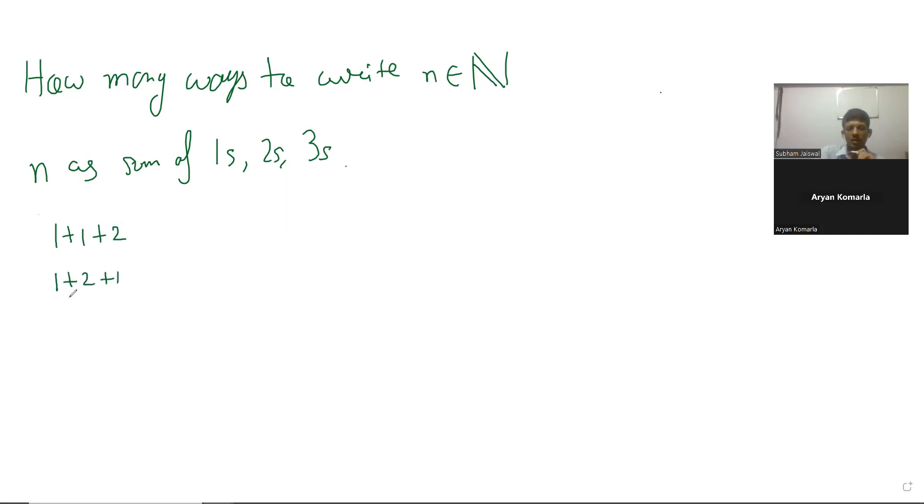You can get a recurrence relation. If t_n is the number of ways, then t_n equals t_{n-1} plus t_{n-2} plus t_{n-3} if we consider them to be different based on order.